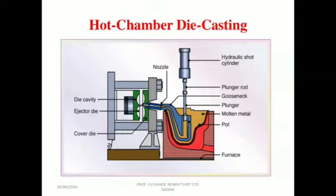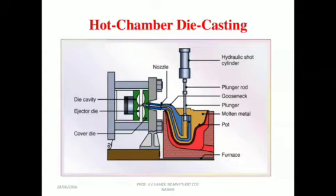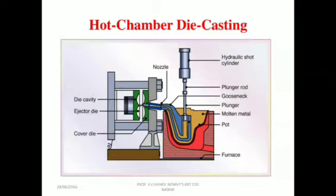In the hot chamber machine, the furnace melts the metal — that means it changes the state of the metal from solid to liquid. Therefore it is an internal mechanism. This internal mechanism makes the hot chamber process faster.